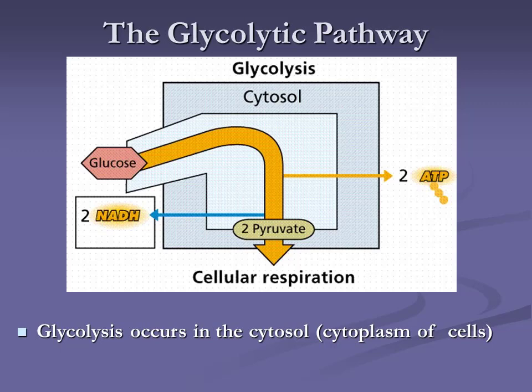When you get a paycheck, the net is the important part — what's going into your bank account. Glycolysis actually produces more ATP, but you have to use some during glycolysis, so our net production is only two ATP. Substrate level phosphorylation produces four ATP gross in glycolysis, but net is two.